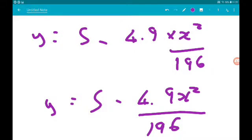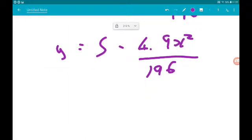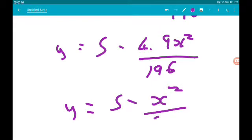Now we can even make this a little bit nicer. So 4.9 over 196 simplifies to 1 over 40. So we can say y is 5 minus x squared over 40.